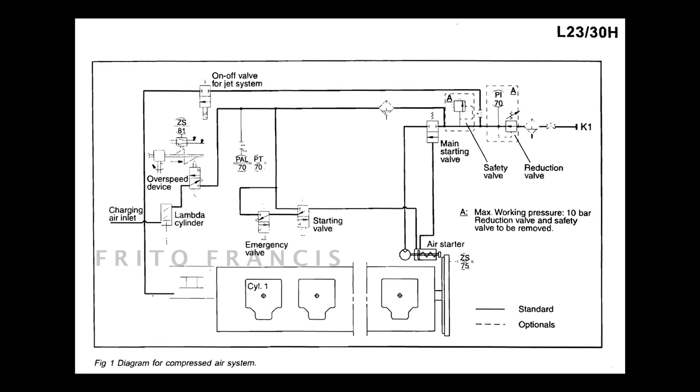1. Starting air at 30 bar comes through K1, with manual valve and drain provided for safety. 2. This 30 bar will get reduced to 9-10 bar in the reduction valve, the starting pressure required.